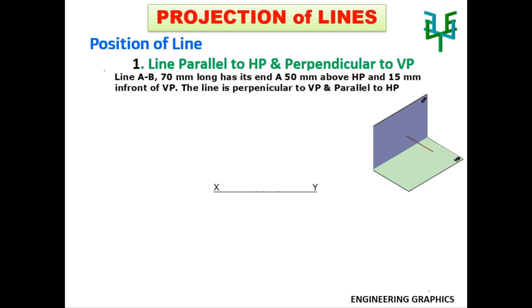First, draw an XY line. The line AB is parallel to HP, so its true length can be seen in the plan. Before drawing the line, its end point A can be fixed first. End A is 15mm in front of VP, so the plan of point A can be fixed 15mm below the XY line.